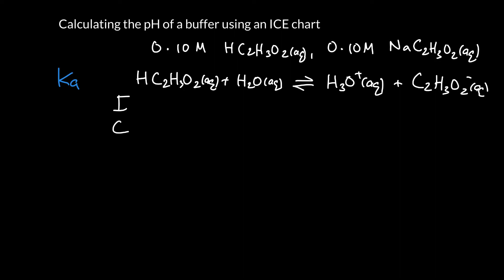Okay, we can fill out our ICE chart. Initial, change, equilibrium. We initially have a solution that's 0.1 molar in acetic acid, and it's actually 0.1 molar in acetate.